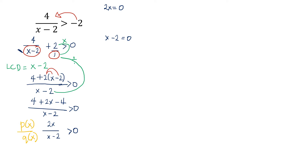For 2x equals 0, by MPE we multiply both sides by one-half, leaving x equals 0. So x equals 0 is one critical value. For x minus 2 equals 0, by APE we get x equals 2. So the other critical value is x equals 2.